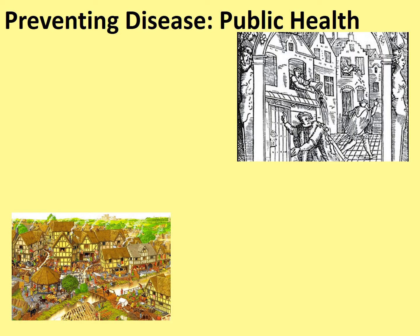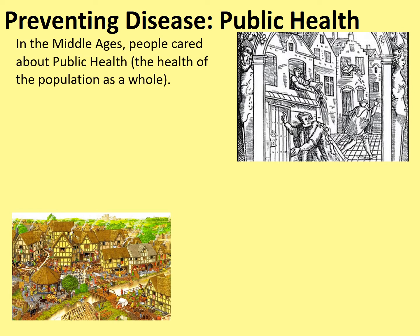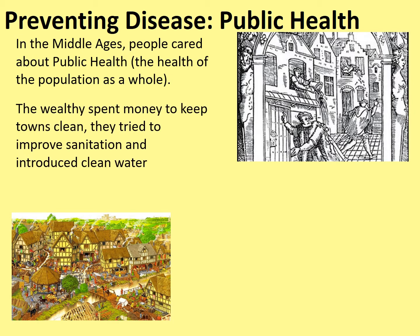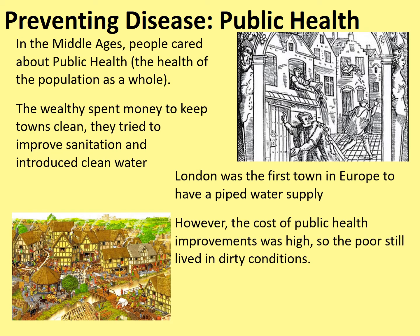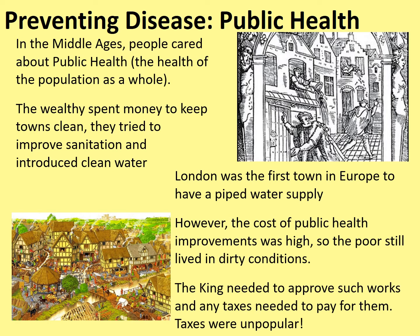Let's have a look at our first section. Remember to record your notes under the headings of problems and solutions. In the Middle Ages, people cared about public health — the health of the population as a whole. The wealthy spent money to keep towns clean and tried to improve sanitation and introduce clean water where they could. London was the first town in Europe to have a piped water supply. However, the cost of public health improvements was high, so the poor still lived in dirty conditions. The king needed to approve such works and any taxes needed to pay for them, and taxes were very unpopular, so most of the time it would be wealthy individuals who would build them.